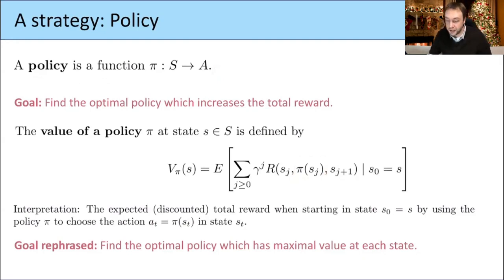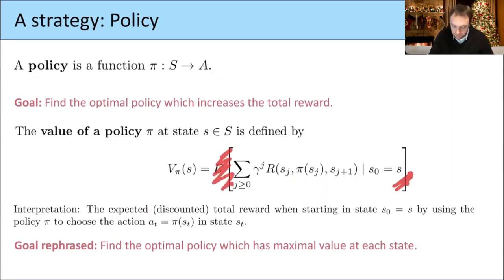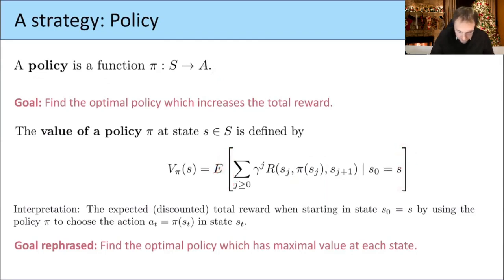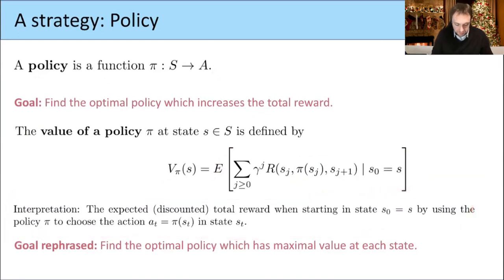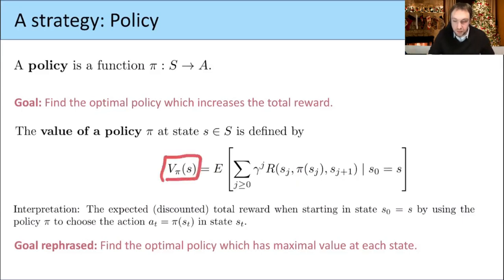In our Konbini lecture example, we actually don't need the expected value, because if I start in one state and choose an action, there's just one possible next state. So we really just have the sum of these rewards. What this number means is: if I fix a policy, then the value of this policy at some state S is the expected total reward I can get by starting in that state and choosing this policy.